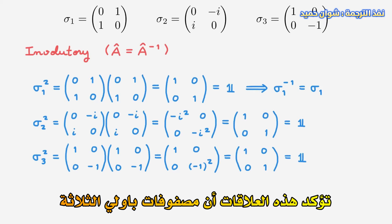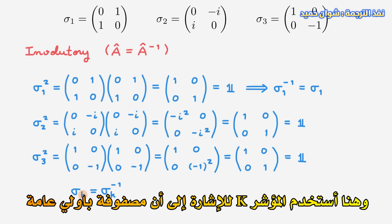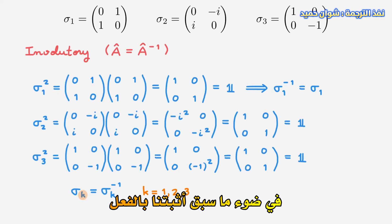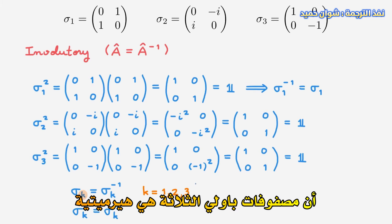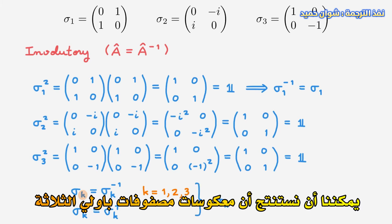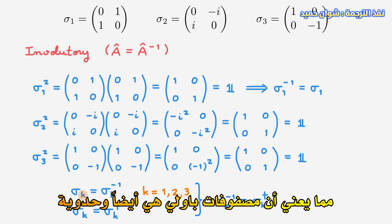In the previous slide, we've already established that the Pauli matrices are Hermitian. Bringing these two insights together, we can conclude that the inverses of the Pauli matrices are equal to their adjoints, which means that the Pauli matrices are also unitary.